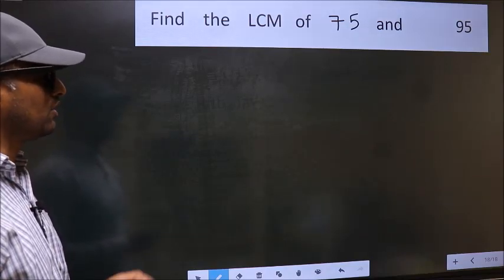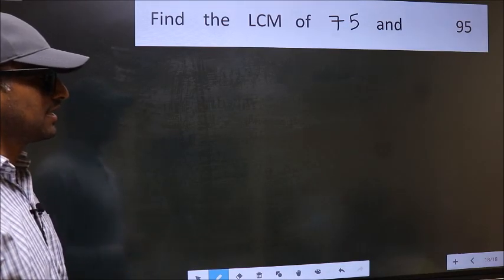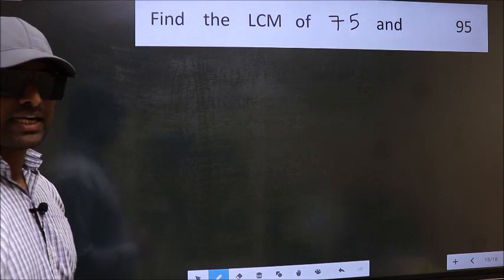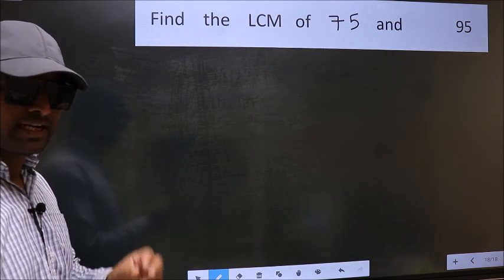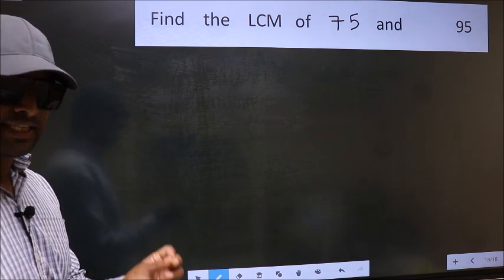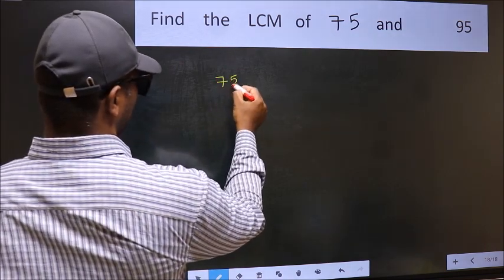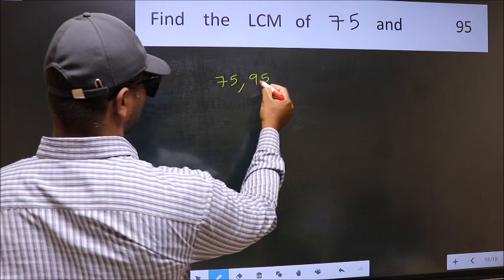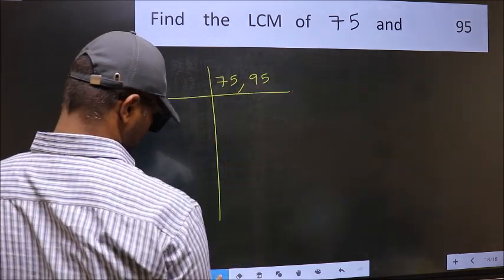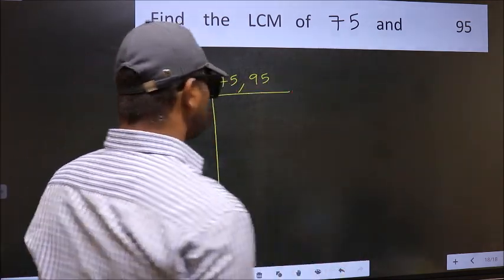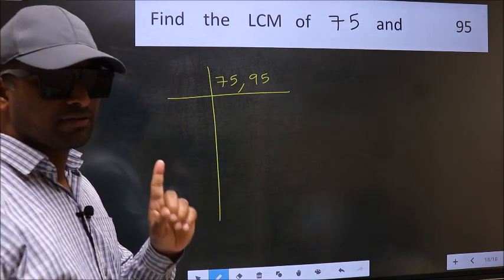Find the LCM of 75 and 95. To find the LCM, we should frame it in this way: 75, 95. This is your step 1.